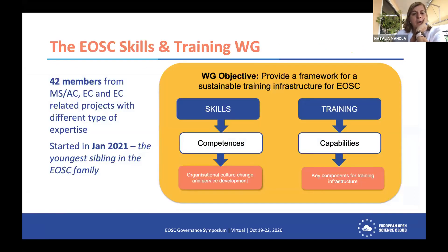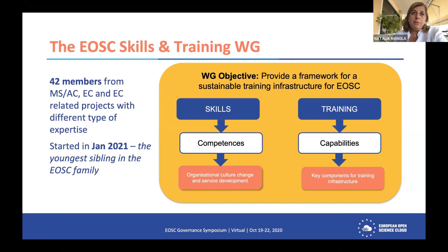Coming back to our work in the Skills and Training Working Group: we are 42 members representing ministries or representatives from member states and associate countries, European Commission officials, and EC-related projects with different types of expertise. In our group we have people from libraries, data centers, research institutes, and learning environments. We are able to represent a well-rounded view. I should point out that we are the youngest of the working groups — we started one year after everyone else, in January 2021.